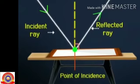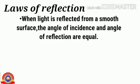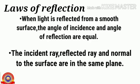So let's have a look at the laws of reflection. When light is reflected from a smooth surface, the angle of incidence and angle of reflection are equal. The incident ray, reflected ray, and normal to the surface are all in the same plane.